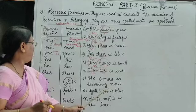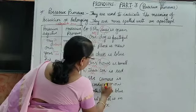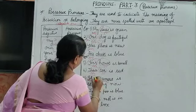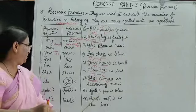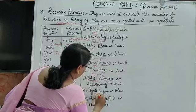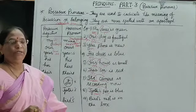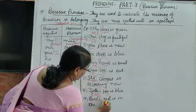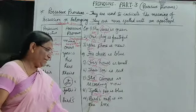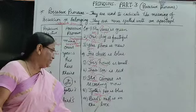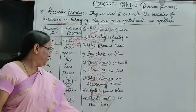Further examples: 'Jyothi's pen is blue' — 'pen' is the noun and 'Jyothi's' is the possessive adjective because it tells about the noun. 'Bird's nest is in the box' — 'nest' is the noun, and 'bird's' qualifies the noun, so it is a possessive adjective. It shows somebody's possession — whose pen? Jyothi's pen. Whose nest? Bird's nest.